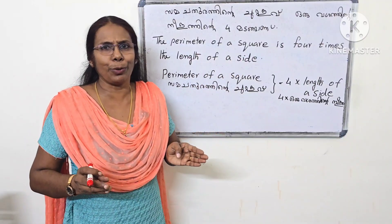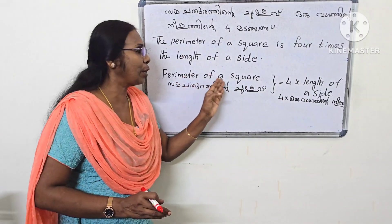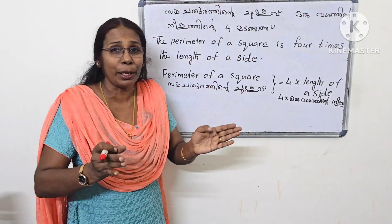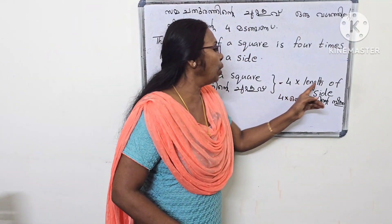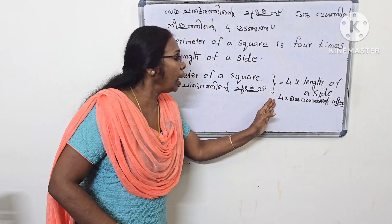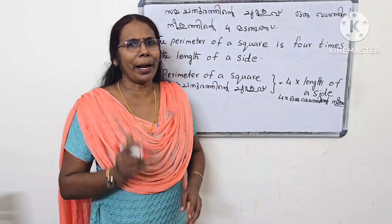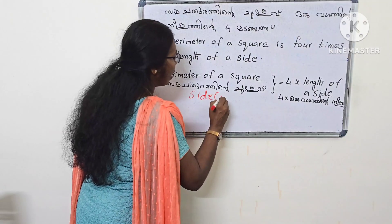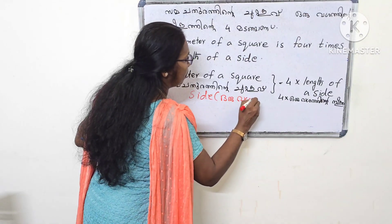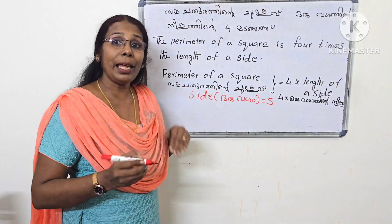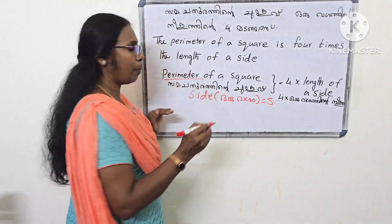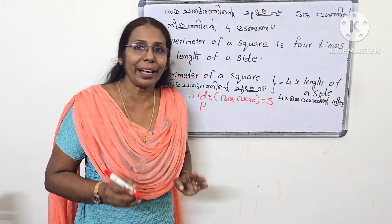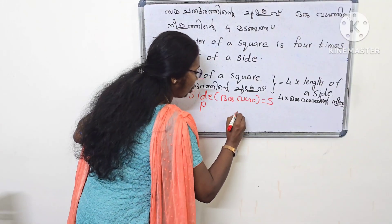Let's look at this a little bit, shortening it. The perimeter of a square is 4 times the length of a side.